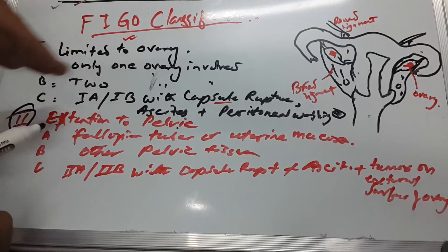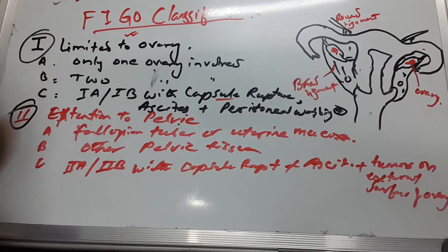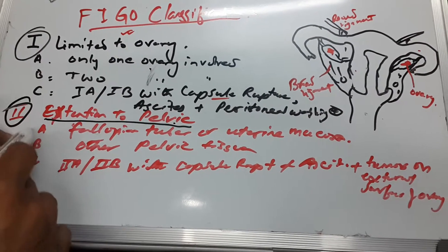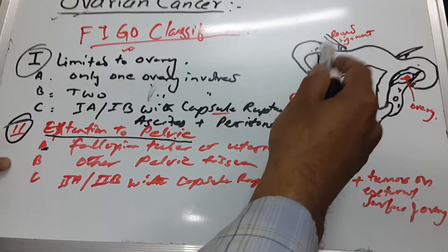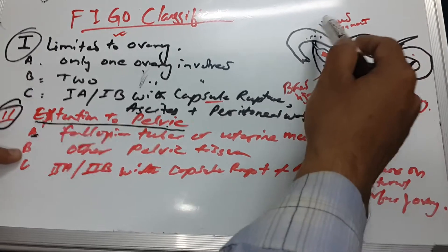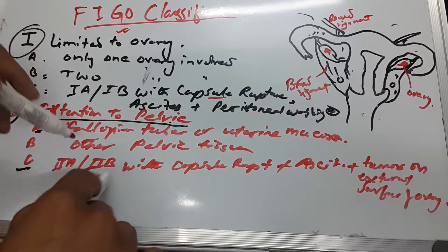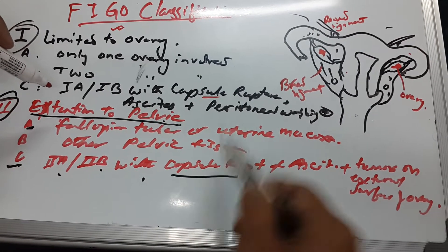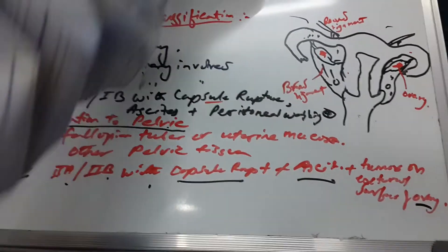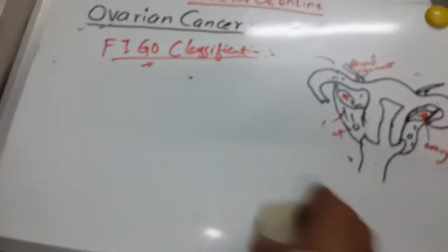To summarize Stage II: the cancer now extends to the pelvic part, whereas in Stage I it was only limited to the ovary. Stage IIA means extension only to the fallopian tubes or uterine mucosa; IIB means other pelvic tissues are also involved; and IIC is IIA or IIB with capsule ruptures, ascites, and tumor on the external surface of the ovary.